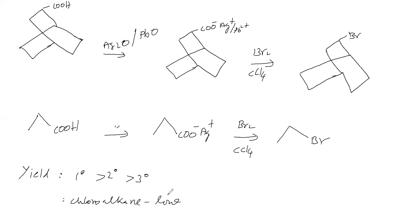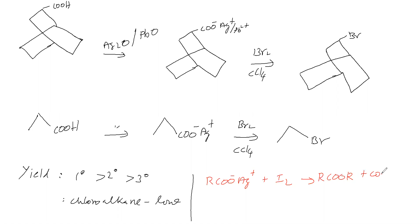Can we prepare Iodoalkanes using this method? If we take the silver salt of carboxylic acid and use Iodine instead of Bromine, the product is an Ester — not an iodoalkane. So Iodoalkanes cannot be prepared by this method. When Iodine is used, an ester is formed along with CO2 and silver iodide. This side reaction is called the Simonini reaction.